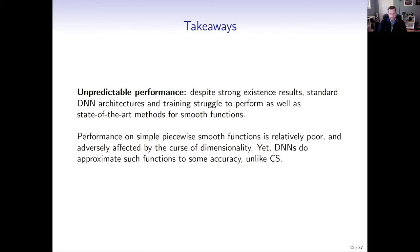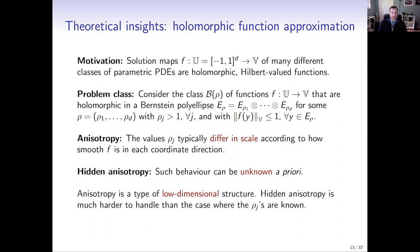The takeaway from this — and there are many more results in the paper and supplementary materials — is that we often have these strong existence results for deep neural network approximation. But if you try to train standard DNN architectures, they struggle to perform well across a variety of settings.